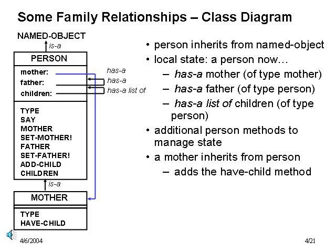Here's our new class diagram for the person and mother classes. A person will have local state variables for mother, father, and children. The mother variable should be a link to an object of type mother, while father will just be a link to a person object. You're welcome to create a new father subclass if you'd like to clean this up. Children will be a list of objects of type person. The person class provides some methods to both access and change this state information.